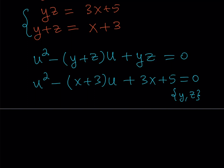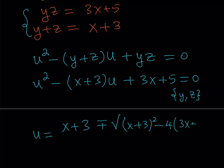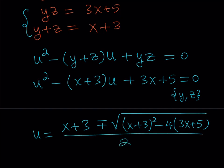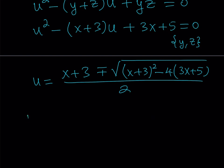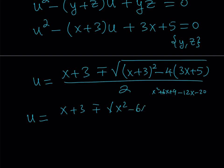Using the quadratic formula: u equals negative b, which is x plus 3, plus or minus the square root of b squared — x plus 3 quantity squared — minus 4ac, all over 2. Expanding: x plus 3 squared is x squared plus 6x plus 9, and distributing the negative 4 gives negative 12x minus 20. So the expression under the radical simplifies to x squared minus 6x minus 11.